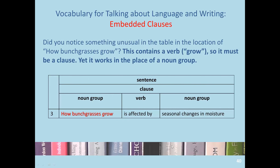You might have noticed that 'how bunch grasses grow' is actually a clause. We've learned that a clause is an expression that contains a verb, but this clause is embedded within a noun group. We have the details and dynamism associated with the verb 'grow,' but packed into a noun group whose job is to represent a thing. By using these embedded clauses, we can balance concrete and abstract expression.